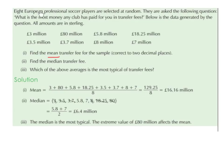Adding up all the values on the numerator we get 129.25, and dividing that by 8 and rounding to two decimal places we get 16.16 million pounds. So the mean transfer fee for the sample is 16.16 million pounds.